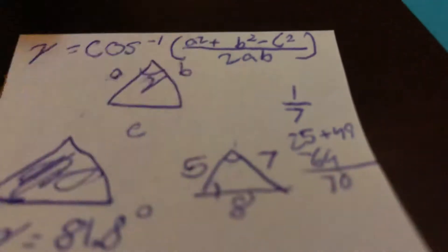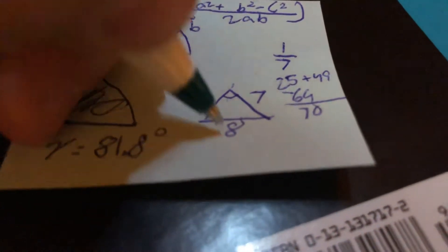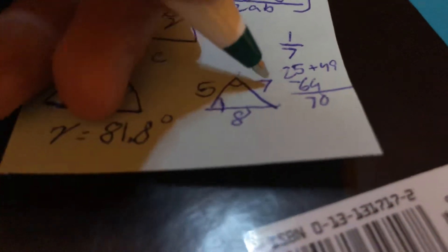Now we're going to find this angle. What's this angle's perspective? Well, the a and the b are the 5 and the 8, and then the c needs to be subtracted as a 7. So we're going to start off with 25 again, and then we're going to add 64 because that's 8 squared. We're going to subtract 49.